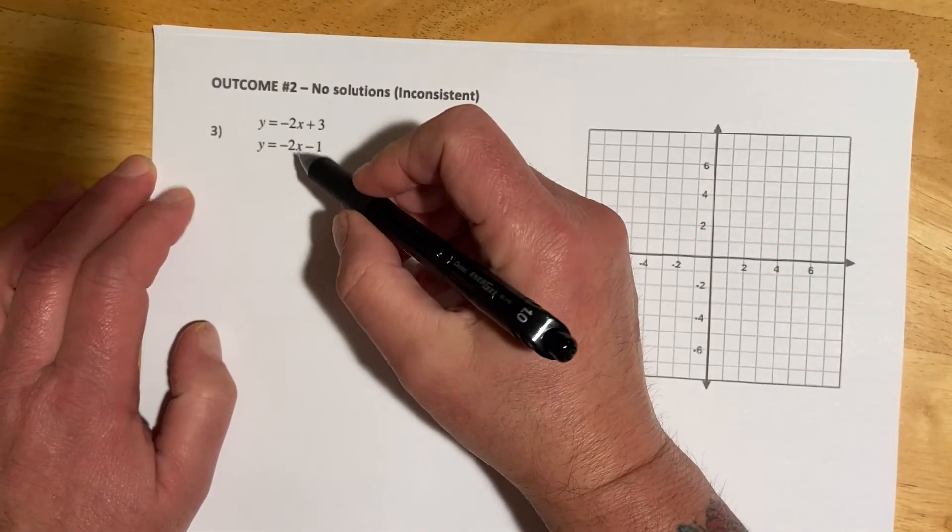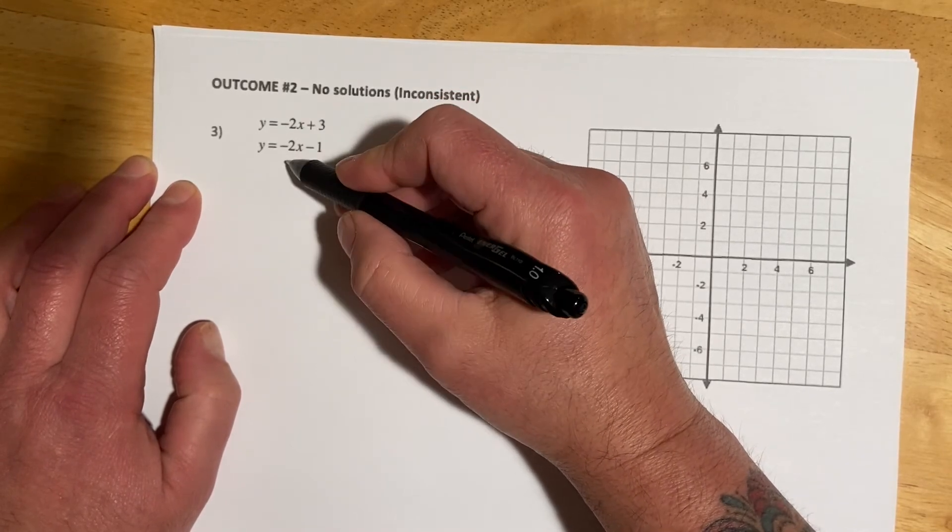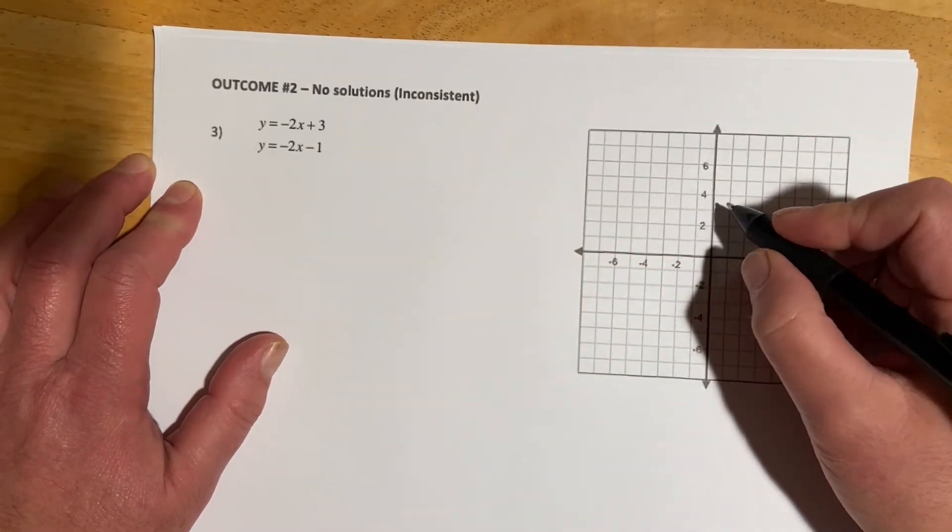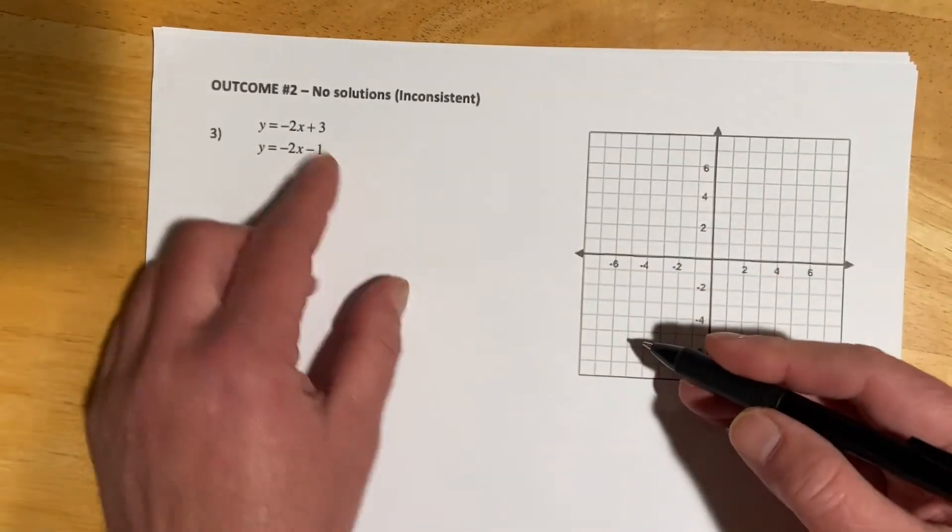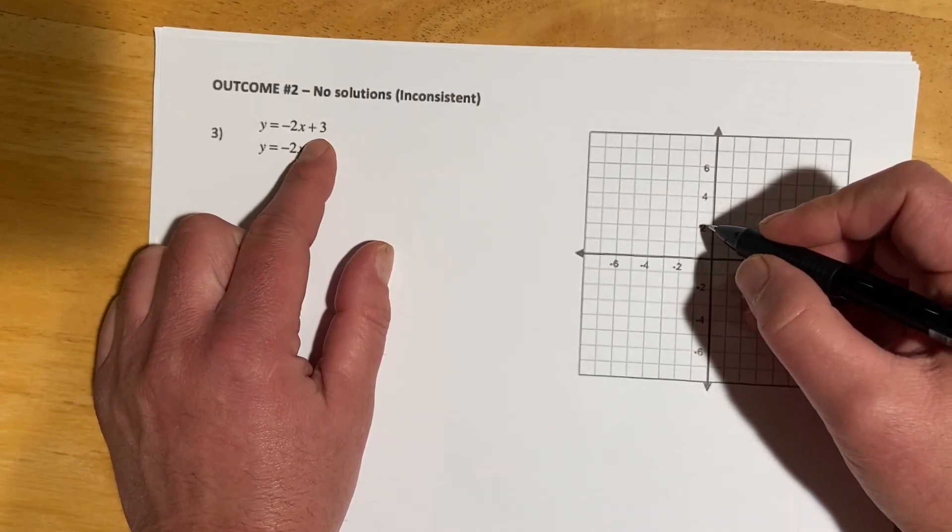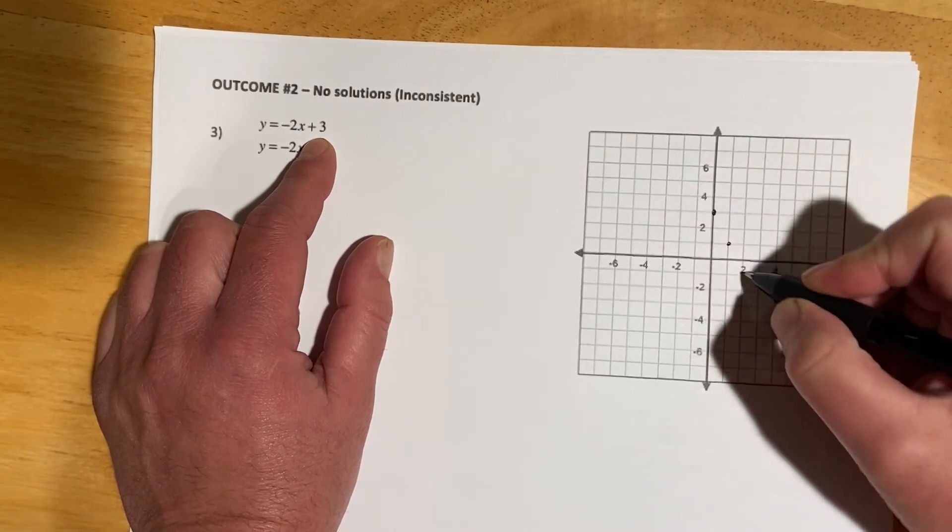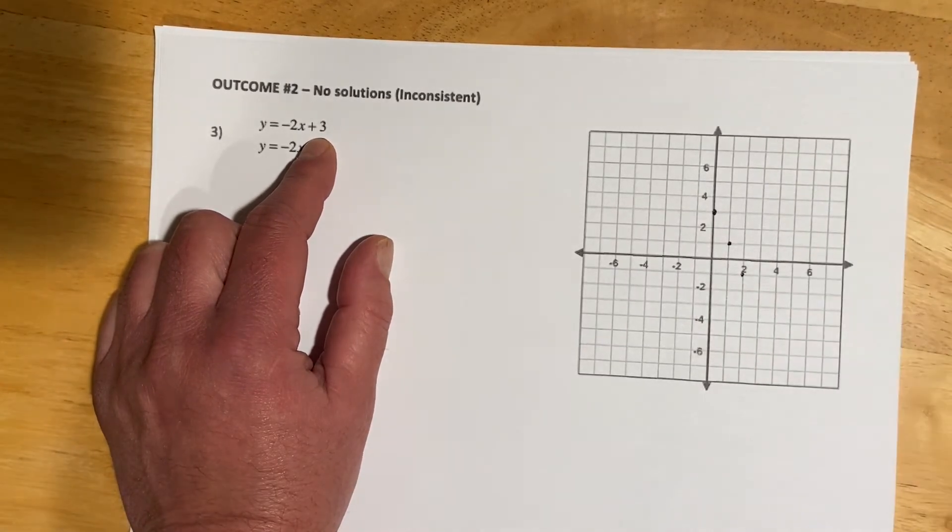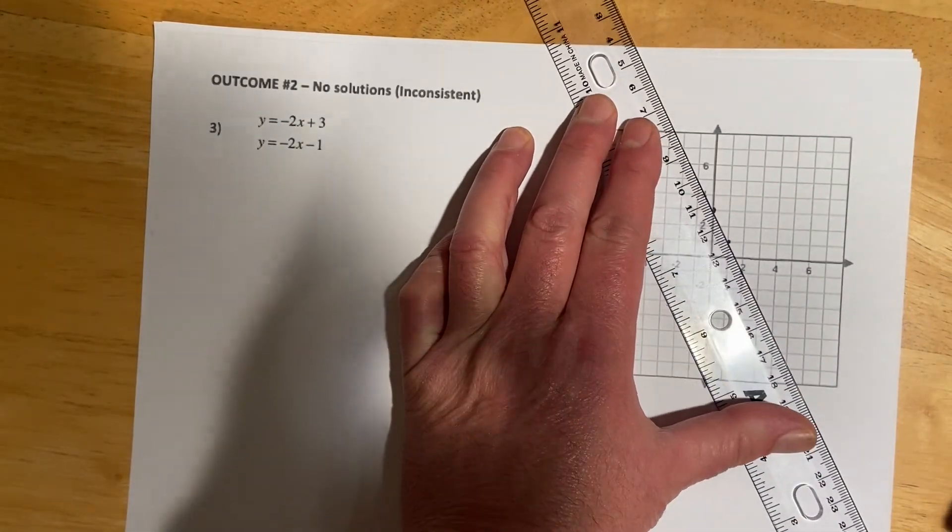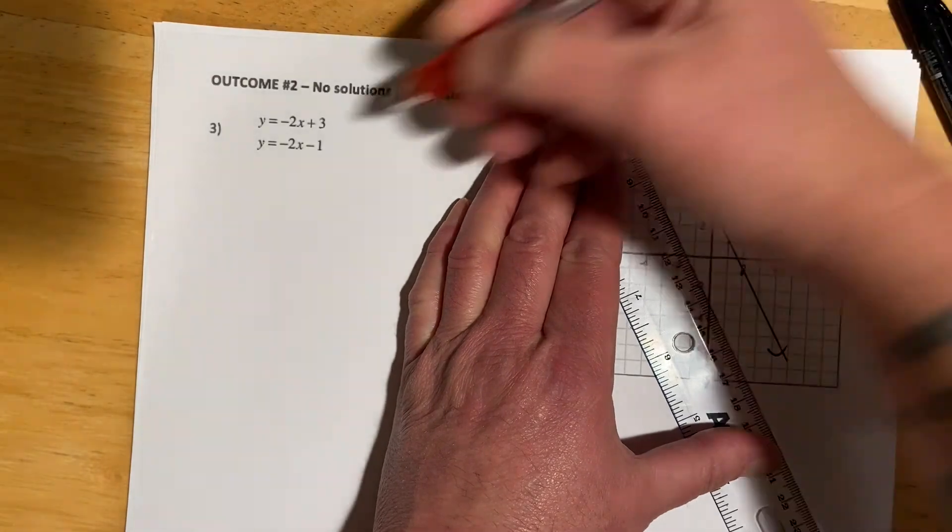Here you can see these are both in slope-intercept form. And then they both have a slope of negative 2 with different intercepts. So you can just look at that and know it's going to be parallel and inconsistent. But just to remind you how to graph using slope and intercept. For this first one, the intercept is at 3 and the slope is negative 2. So I'm just going to go over 1, down 2, over 1, down 2, and then try to draw a straight-ish line.